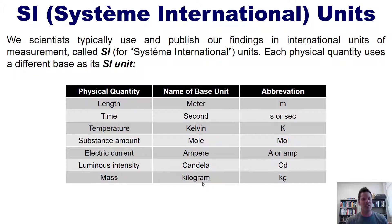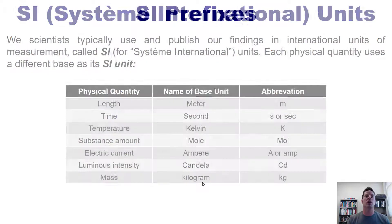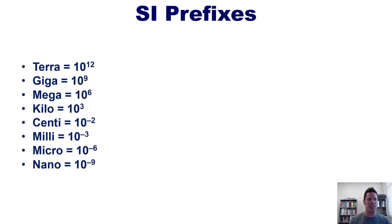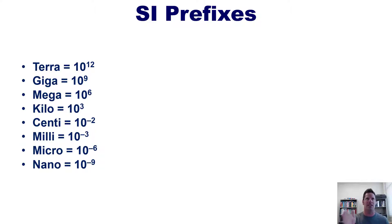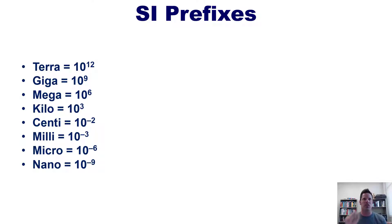Those are the SI base units. Slapped on top of all these are numerous prefixes that represent specific numbers. For example, a terameter is 10 to the 12th meters — that's 10 multiplied by itself 12 times. A nanometer is 10 to the negative ninth meters, which is 0.000... with a bunch of zeros and then a one, followed by meters. So a nanometer is very, very small, and a terameter would be very, very large.